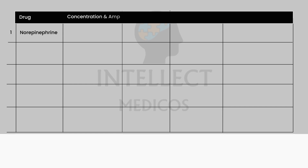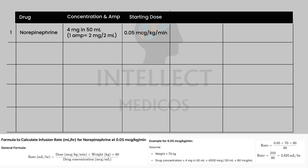Now for norepinephrine: take two ampules — each has 2 mg — giving 4 mg total in a 50 ml syringe. The starting dose is 0.05 mcg/kg/min. For a 70 kg patient, this calculates to approximately 2.62 ml/hr on the infusion pump. So simply remember: start at 2.5 ml/hr on the infusion pump when using two ampules of norepinephrine.